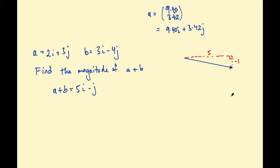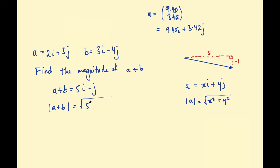Finding the magnitude is equivalent to finding the hypotenuse of this right triangle using Pythagoras's theorem. In general, for a vector a = xi + yj, the magnitude |a| = √(x² + y²). In this example, the magnitude of a + b = √(5² + 1²) = √(25 + 1) = √26. Whether the component is negative doesn't matter since you're squaring it.